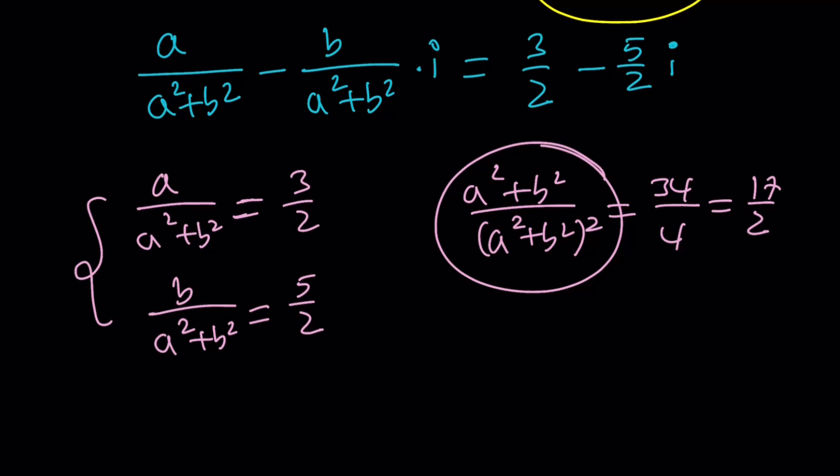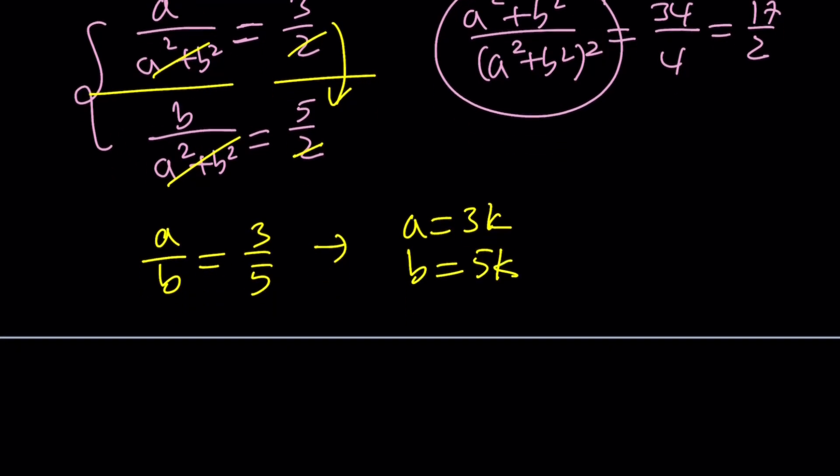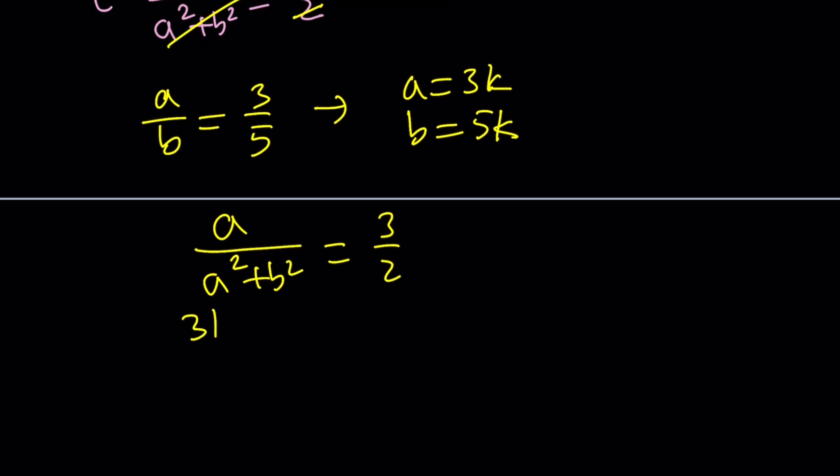Or you can think about it this way: you can divide these, right? And when you divide, A squared plus B squared is going to cancel out, and you end up with A over B, and of course the twos are also going to cancel out, giving you 3 over 5. Now at this point I think it makes sense if we assume A can be written as 3k and B can be written as 5k. Then plug it into one of these equations.